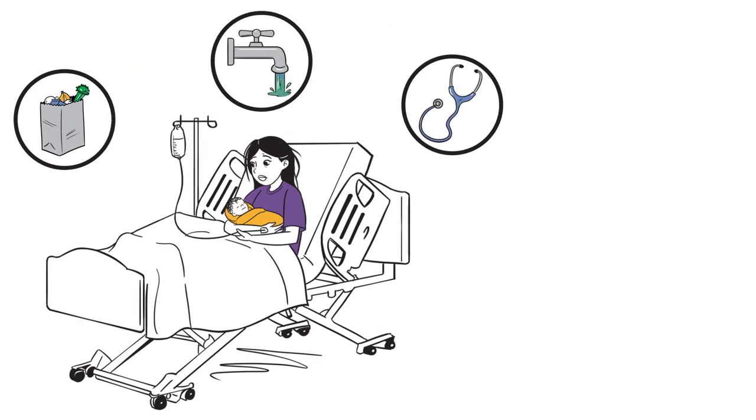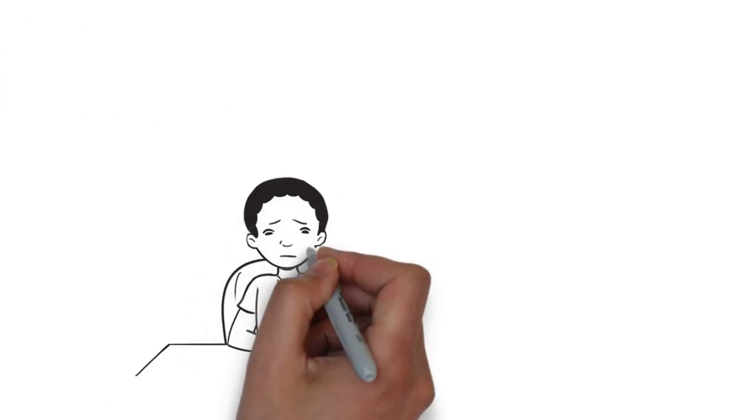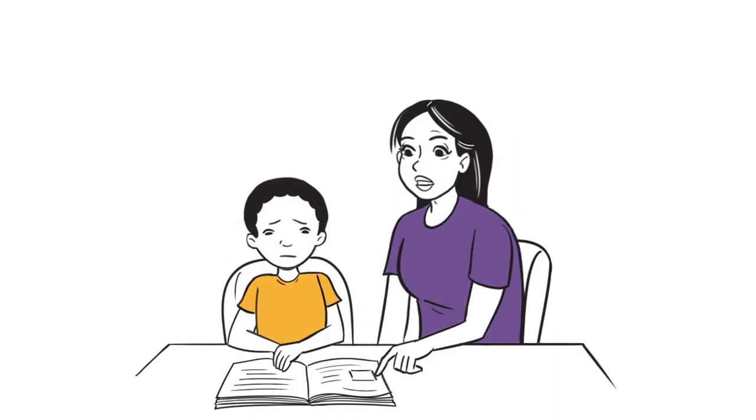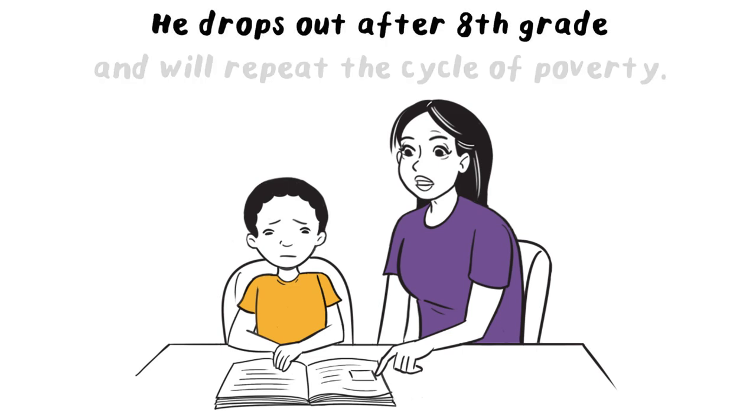As he grows up, Jessica learns that her school district doesn't have the resources to accommodate her son's special needs. He drops out after eighth grade and will repeat the cycle of poverty.